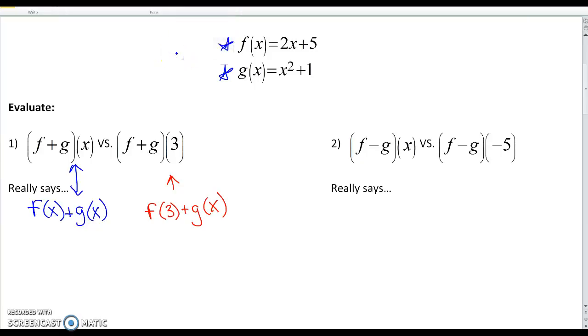So first, f of x plus g of x. Well, f of x is 2x plus 5, g of x is x squared plus 1. You're just going to combine like terms and add those together. So you'd get x squared plus 2x plus 6.